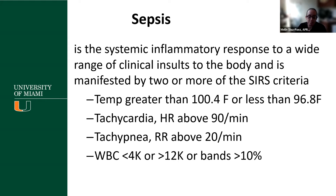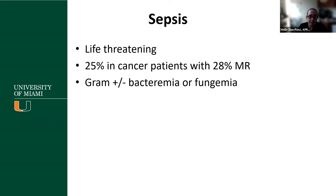One is temperature greater than 100.4 degrees Fahrenheit, or hypothermia — less than 96.8 Fahrenheit. Patients will usually show tachycardia, with heart rate above 90 beats per minute. On their CBC, you might see a white blood cell count less than 4,000 or leukocytosis with a white blood cell count above 12,000. In the differential, you may also see immature white blood cells indicated by bands greater than 10%. Remember that sepsis is life-threatening and an emergency — 25% incidence in cancer patients with a mortality rate of up to 28%. Typically, we see it caused by either gram-positive or gram-negative bacteremia or fungemia.